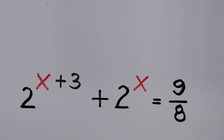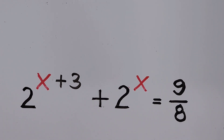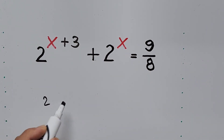Hello everyone, we have the exponential equation 2 to the power of x plus 3, plus 2 to the power of x, equals 9 over 8. We are solving for the value of x. In this equation, you have two exponential terms bearing the variable exponent x, so our aim is to combine and factor out those terms so we can solve for x.